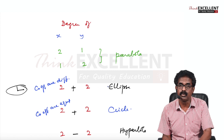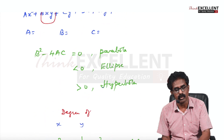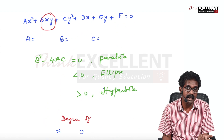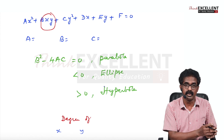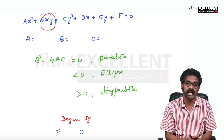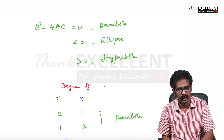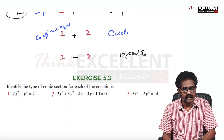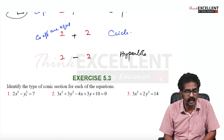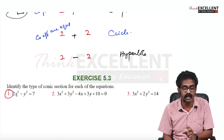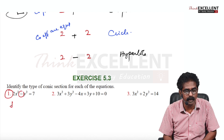This is the easiest way when the XY term is not present. But if the XY term is there, use B²-4AC. When identifying A, B, C, be very careful — not like 11th standard where Y² coefficient was B; here, X² coefficient is A, XY coefficient is B, and Y² coefficient is C. Now look at the examples. First question: X degree 2, Y degree 2, and the sign in between is minus — so it represents hyperbola.